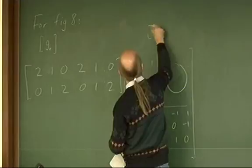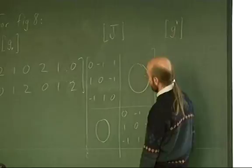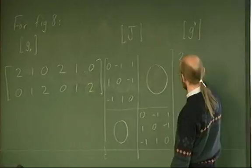So this is the matrix for J. And then the other thing we had was the adjoint, which is represented by the transpose of this matrix.